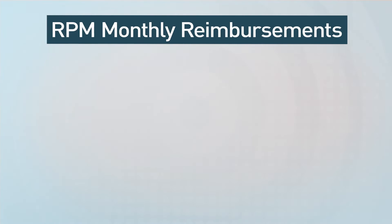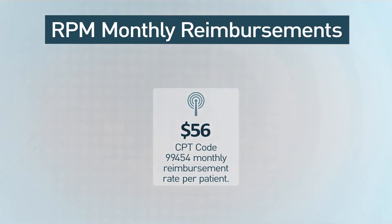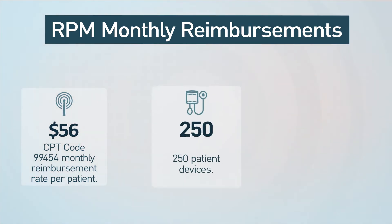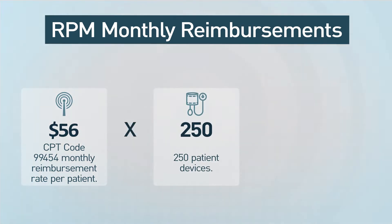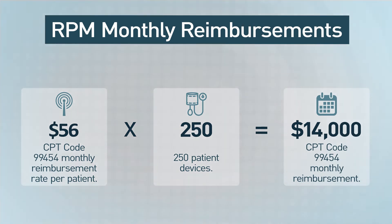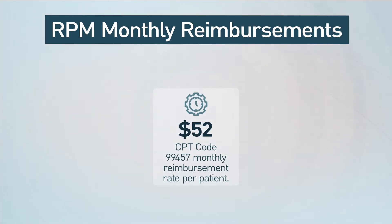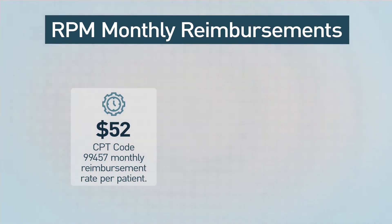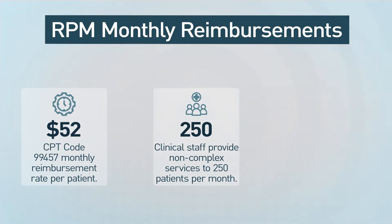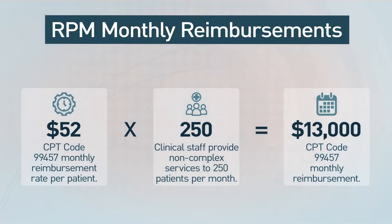Now let's look at the monthly reimbursements for RPM. First is CPT code 99454. This code requires 16 days of readings and provides around $56 per patient per month. With 250 patients, that's around $14,000 monthly just for this one code. The second monthly code is 99457. This code pays around $52 per month, and it's for clinical staff spending at least 20 minutes of non-complex services to their patients each month. For those same 250 patients, that's an additional $13,000 monthly just for this one code.